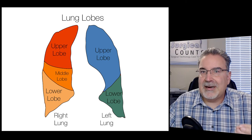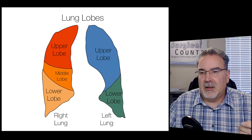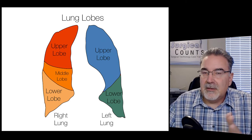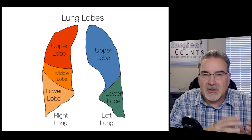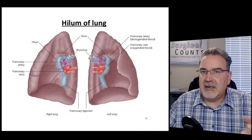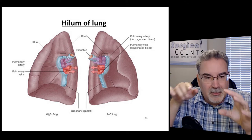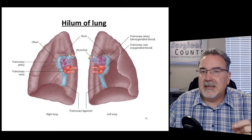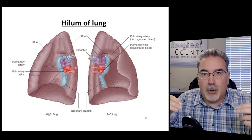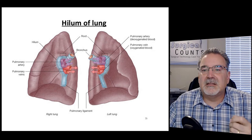The lungs themselves are divided into lobes, with a fissure — a break — between each lobe. They're like completely separate sections of the lung. The left lung has two lobes; the right lung has three lobes. The left lung is actually a little smaller because the heart sits on the left side and takes up some of that space. Just like the kidney has a little indentation where the ureter and blood vessels come in and out, the lung has a similar indentation called the hilum, where the bronchus, pulmonary arteries, and pulmonary veins go in and out.